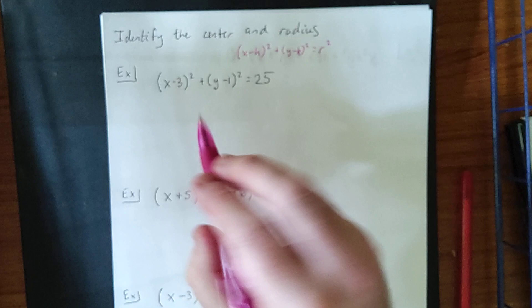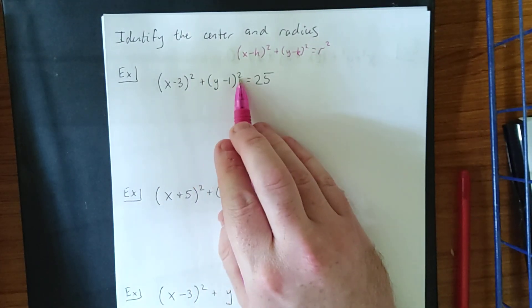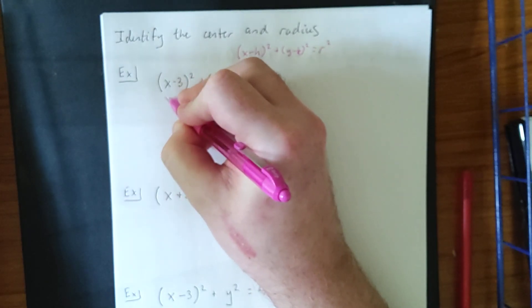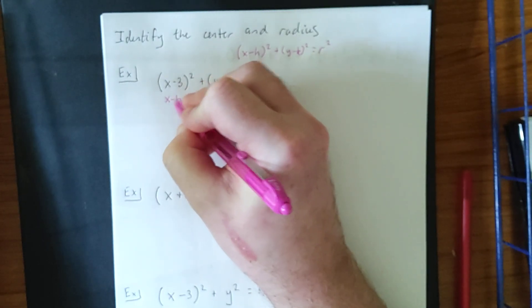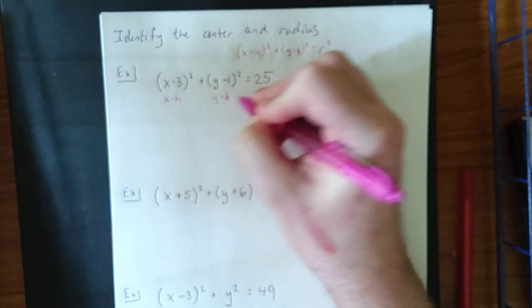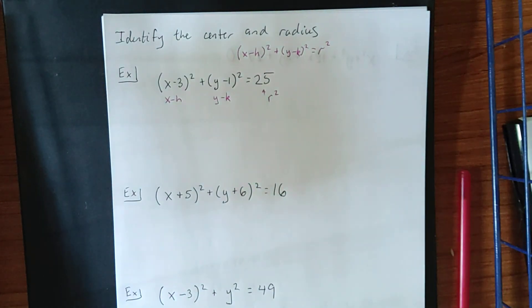So when we're taking a look at something like x minus 3 quantity squared plus y minus 1 quantity squared is equal to 25, we're telling ourselves that this quantity inside the parentheses is actually x minus h, and inside this parentheses, this is y minus k, and this quantity over here on the right-hand side, this is actually r squared.